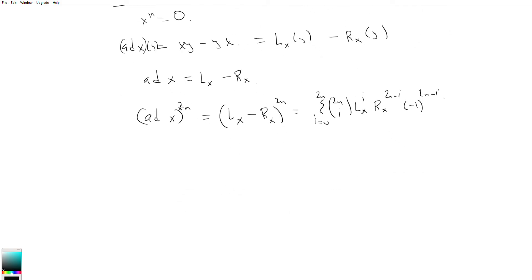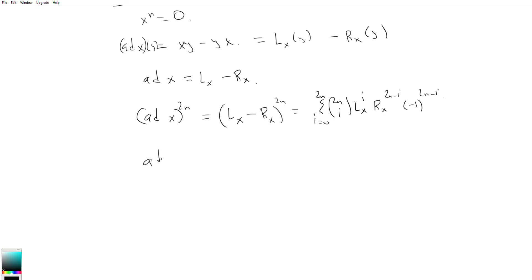So now consider ad x's action on an arbitrary y, or ad x to the 2n's action on some arbitrary y. This is equal to this guy, L_x minus R_x to the 2n acting on y. And so this is equal to sum from i equals 0 to 2n.